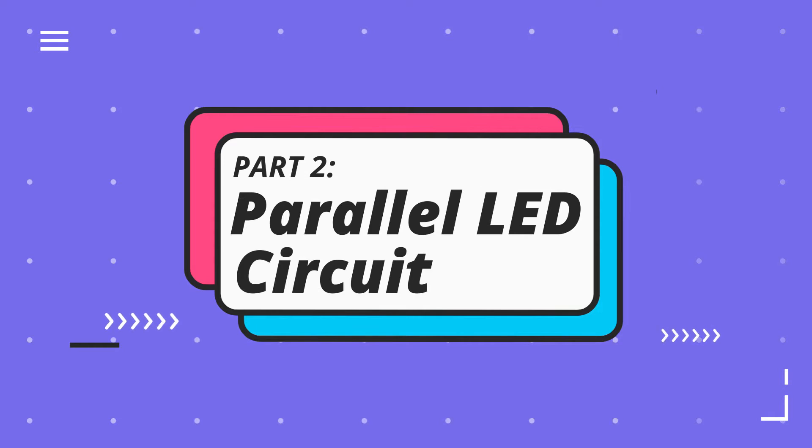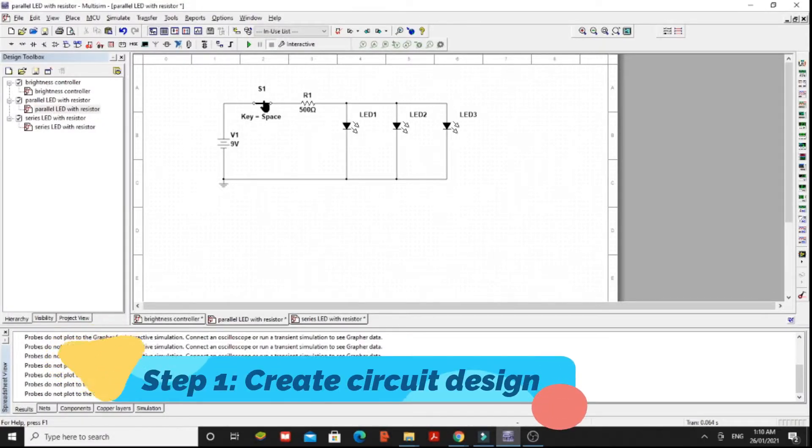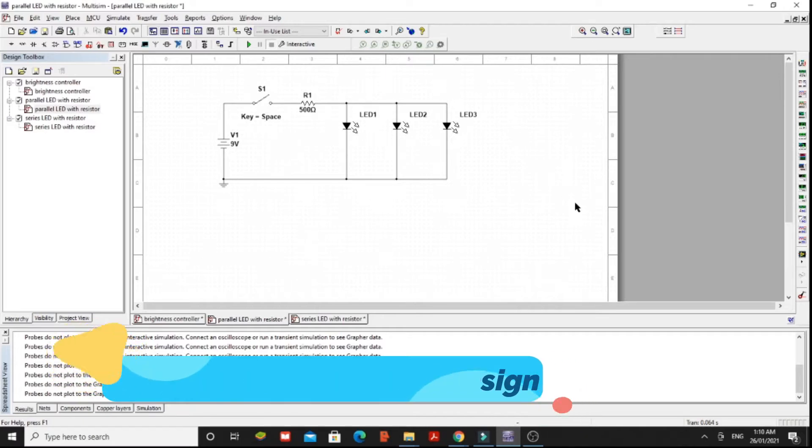The steps here in making parallel connection is the same as the previous step. Step 1: Create a circuit design. This time, we will still use the Multisim application to design the circuit of parallel connection.